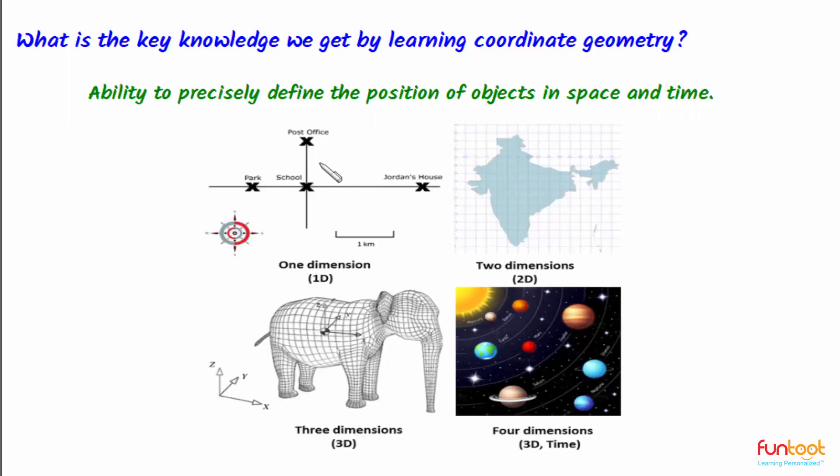For example, let's see the first sketch. It shows the relative positions of Park, School, Post Office and Jordan's House. Here, if we fix the position of school as the point where we stand, with the help of this sketch, we can find the positions of Post Office, Park and Jordan's House if we know the distance of these places from school.